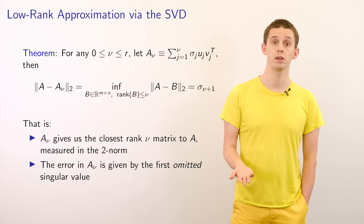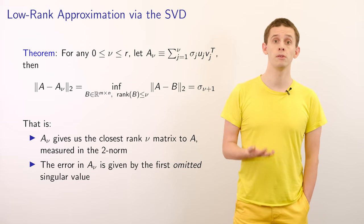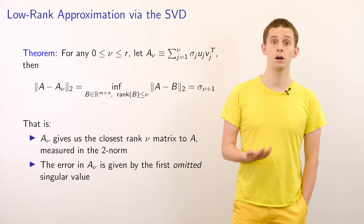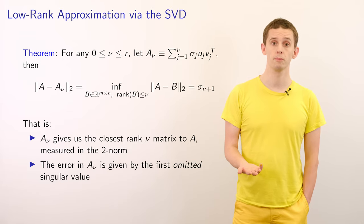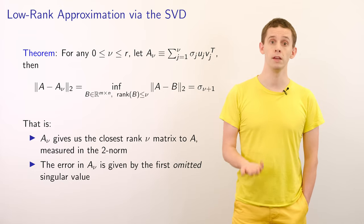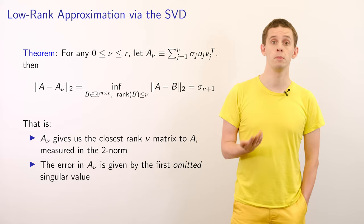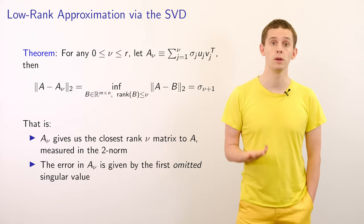So we have the following theorem in this case. Suppose that we look over all matrices B of rank less than or equal to nu. Then we find that the difference between A and B in the induced Euclidean 2 norm will be minimized when B is equal to A subscript nu.